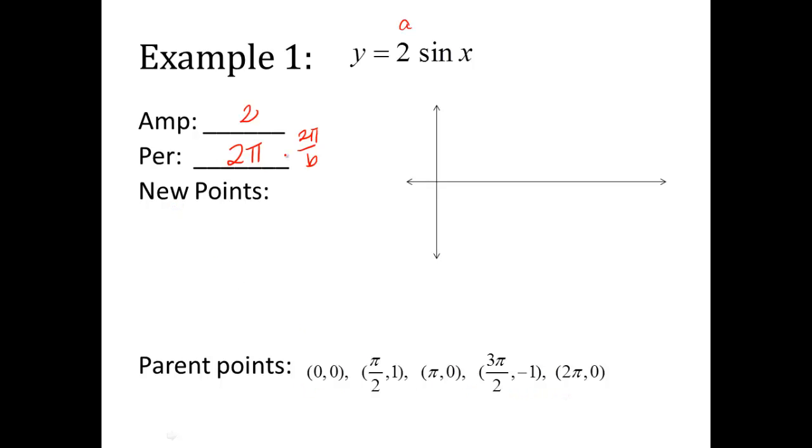So to create my new points, I'm going to multiply the y value by the 2. So it's y times the amplitude. So here's my new point: (0, 0), because 0 times 2 is still 0. (π/2, 2), next, 1 times 2 is 2. π is my x, 0 times 2 is still 0. (3π/2, -2), that negative 1 times 2 is going to be negative 2. And then 2π, 0 times 2 is still 0.